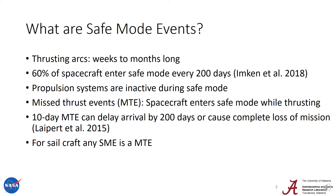Low thrust propulsion, like electric propulsion and solar sailing, are highly efficient and they are an enabling factor for some of the most interesting scientific missions in the upcoming decade. Unfortunately, because of the low thrust levels provided by these propulsion methods, the thrusting arcs are now weeks to months long instead of hours to days long.